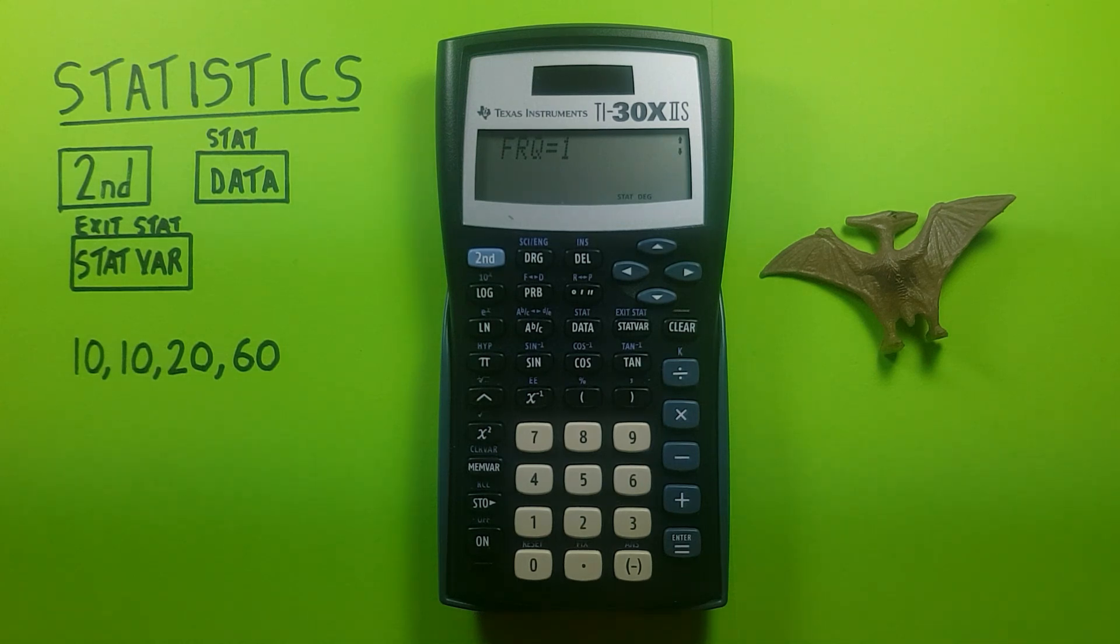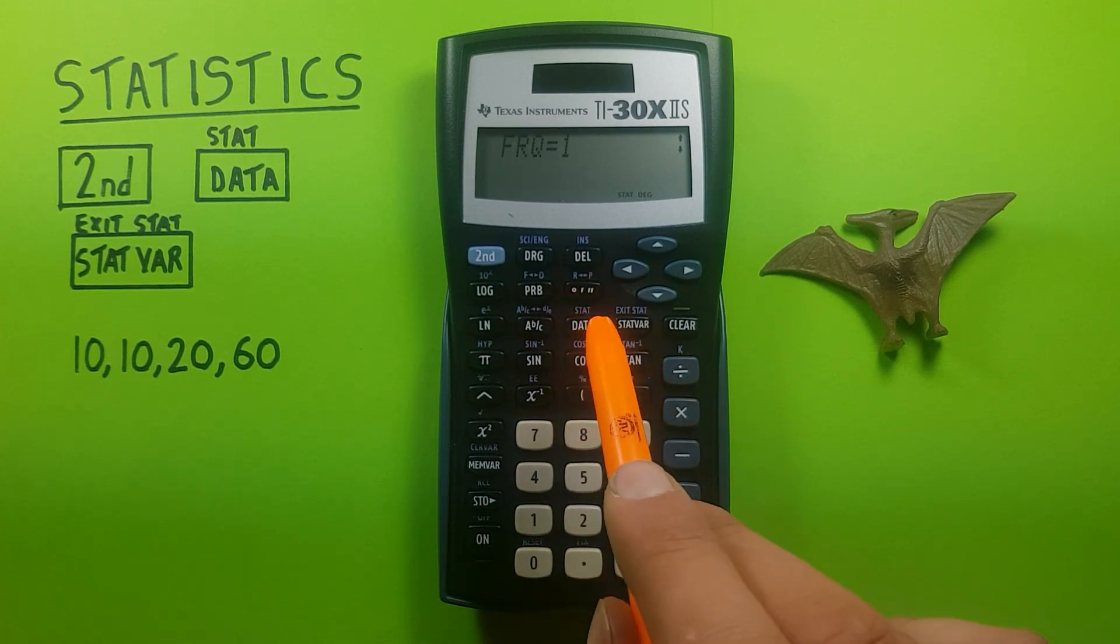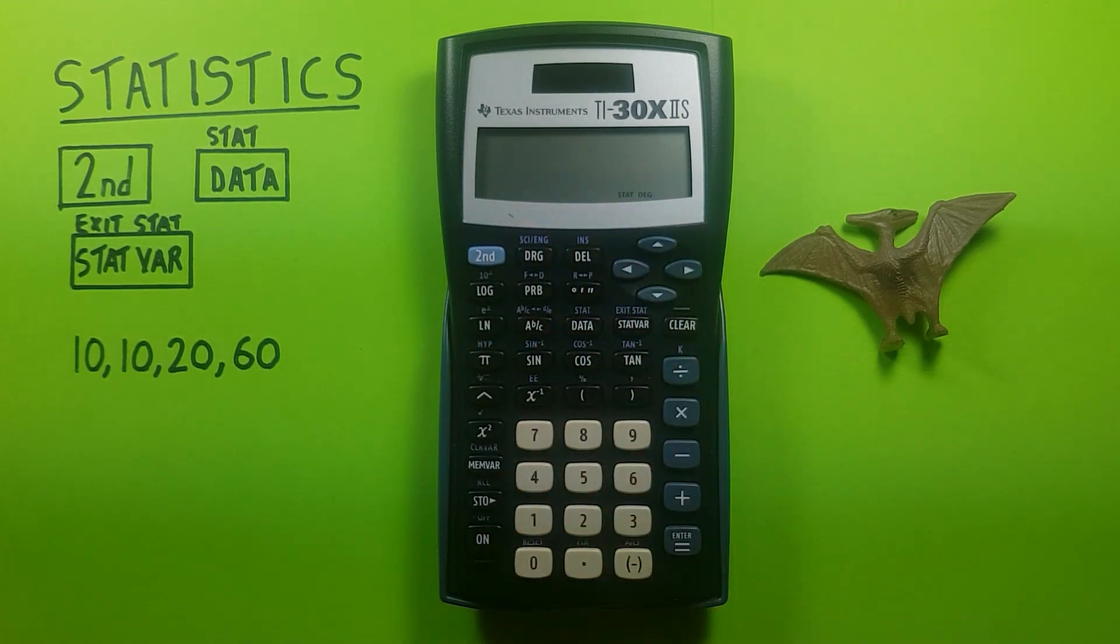If we want to run the calculations, we press data again. You can see the word calc appear on the screen there briefly. That tells us the calculator is running its calculations, and once it's disappeared, back to the blank screen, we know the statistics are ready.